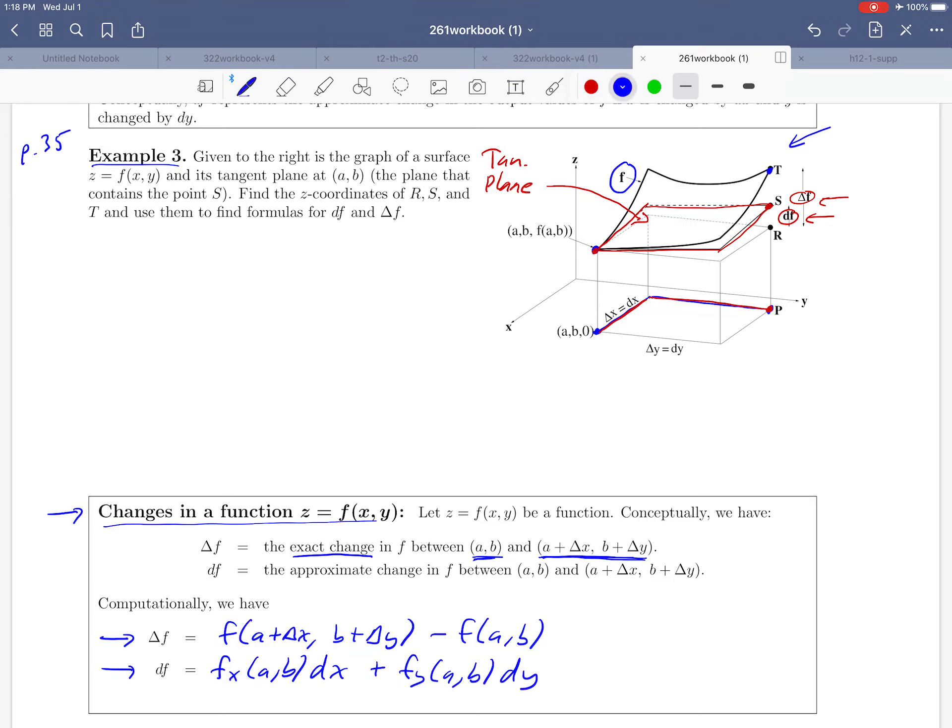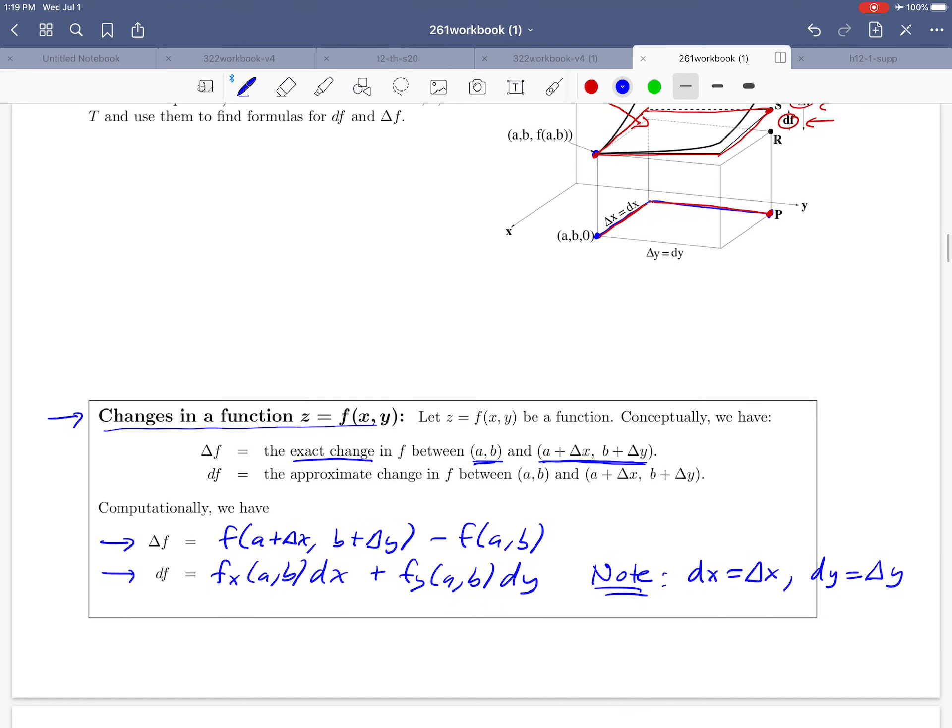Now a couple of notes just to close this discussion. These are notational points mostly. I want to point out that dx and delta x we use those terms interchangeably. They're the same number. They just represent the amount that we're going to change the x variable. Same deal for y. dy and delta y, same thing. Just different notation for representing a little jump in the y direction.